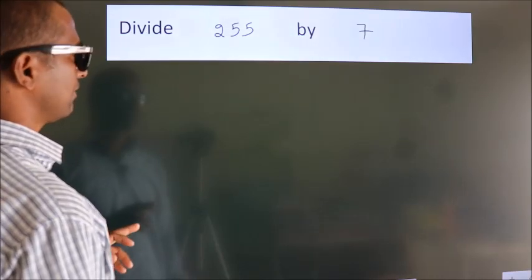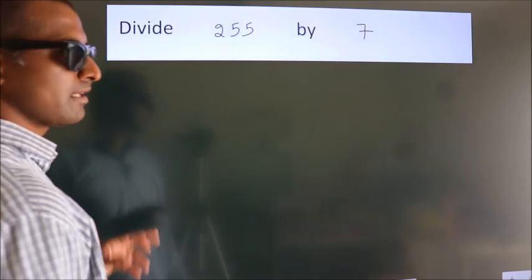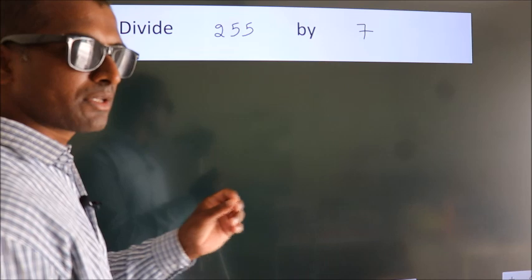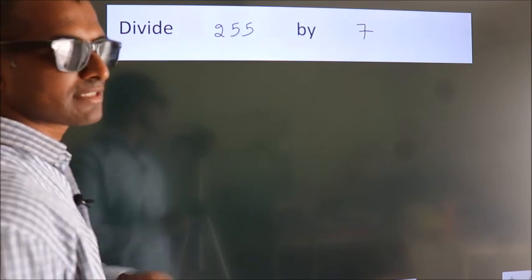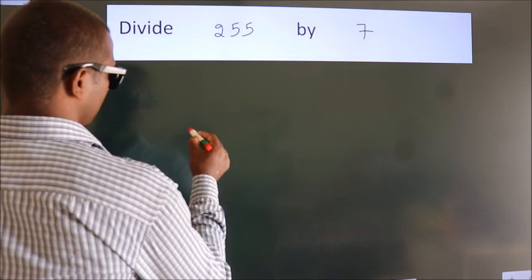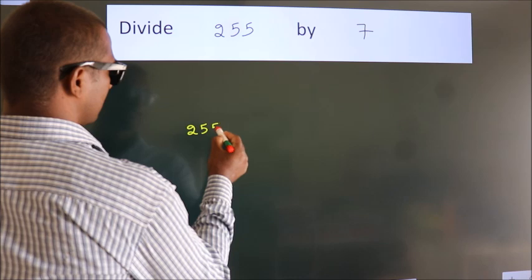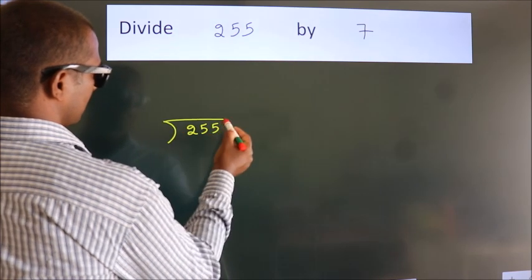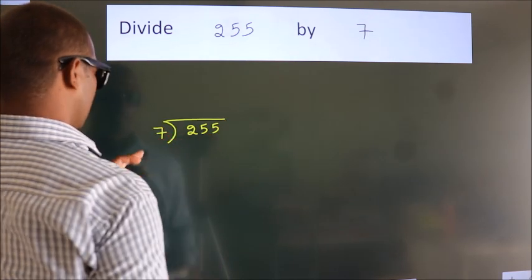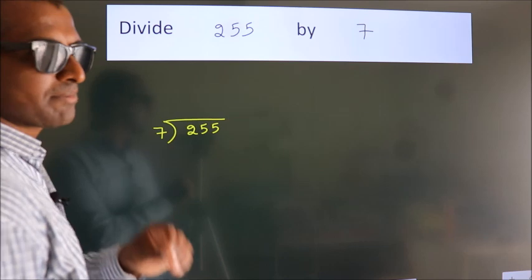Divide 255 by 7. To do this division, we should frame it in this way. 255 here, 7 here. This is your step 1.